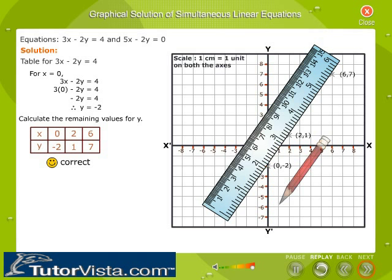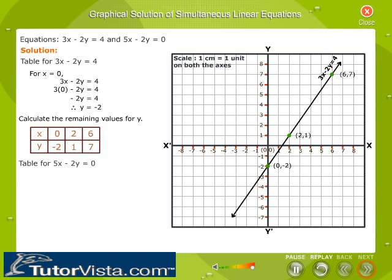This is the line for the equation 3x - 2y is equal to 4. Now, for solving the second equation 5x - 2y is equal to 0,